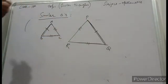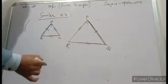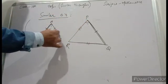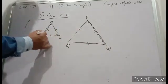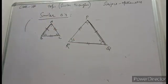First angle A, angle P. Second angle B, angle Q. Third angle C, angle R. So two triangles are similar.